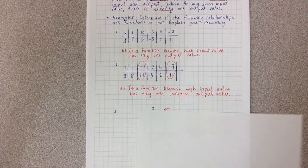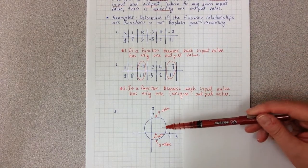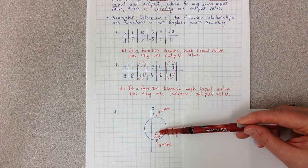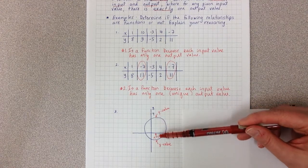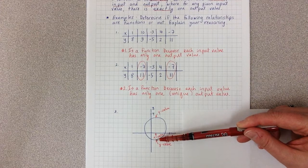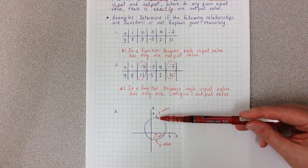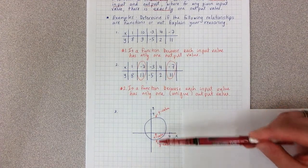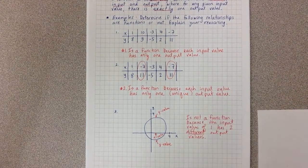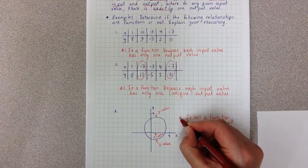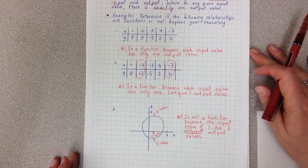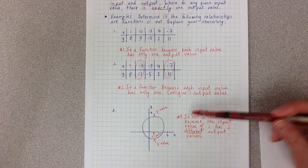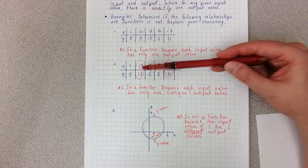Number 3 is a graph. I've labeled on this graph that I'm looking at the x value of 1, or the input value of 1. My input value of 1 gives me a y value up here and a y value down here, which means I get two different answers. And because you can give me two answers, it's not a function. So number 3 is not a function because the input value of 1 has two different output values, unlike example 2 where it had the same output value.